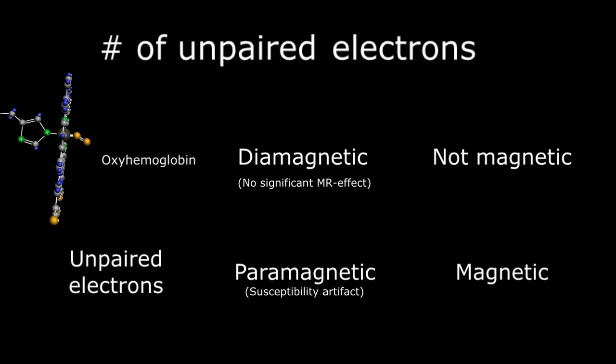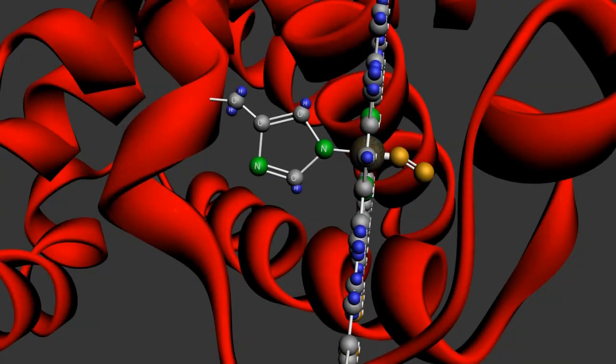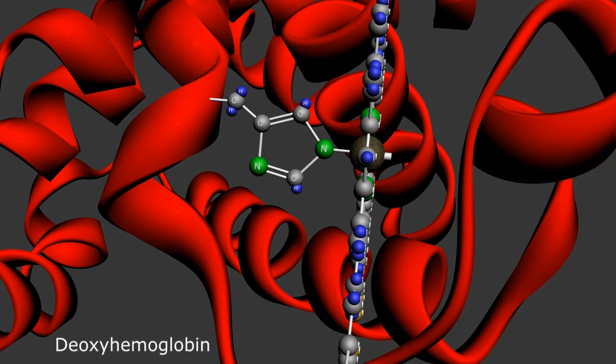Oxyhemoglobin has a reddish hue with no unpaired electrons and is therefore diamagnetic with no significant effect on the local NMR signal. When heme gives up its oxygen molecule, it appropriately becomes the bluish deoxyhemoglobin.